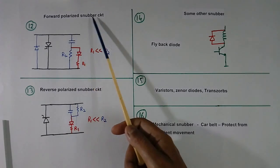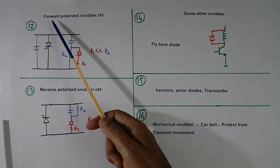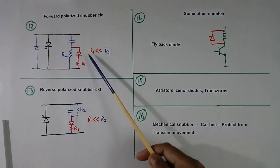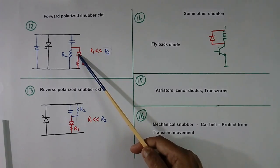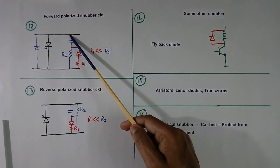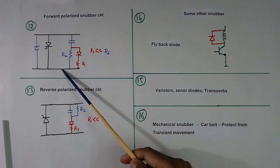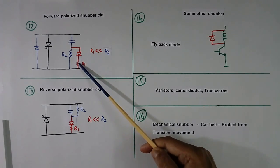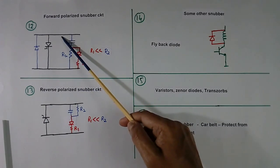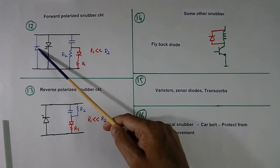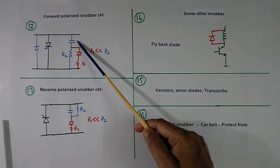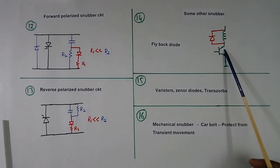Now we will talk about polarized snubber circuit. There are two types: forward and reverse. This is forward type snubber circuit. Here one diode is connected and value of R1 is much lower than R2. So when the high frequency surge comes here, current will flow like this because this resistance is of lower value. In reverse, current cannot flow like this. Current will flow through R2. In this circuit, one diode is connected in parallel of thyristor. This kind of circuit is also used.